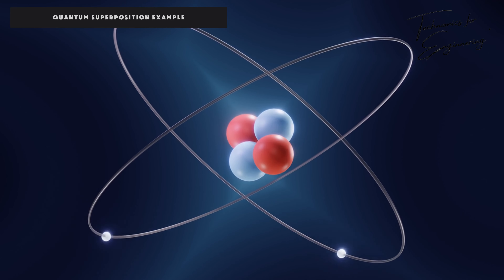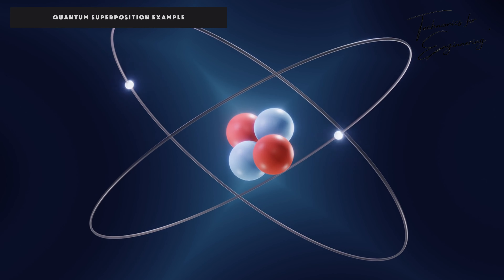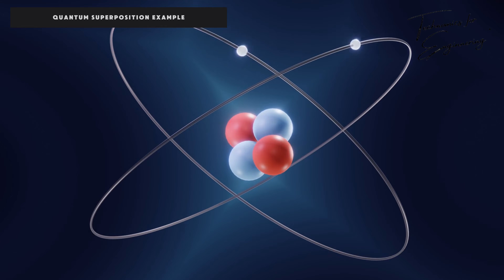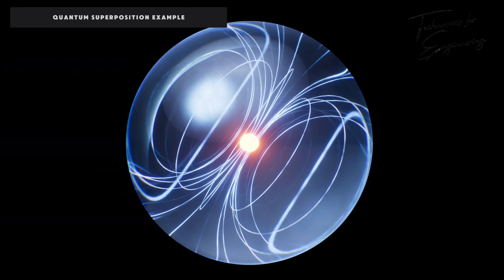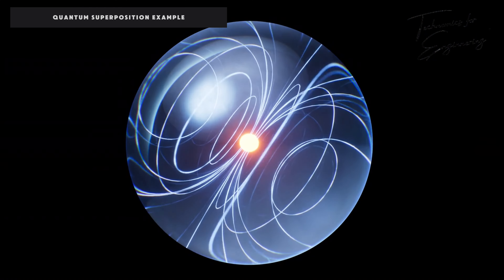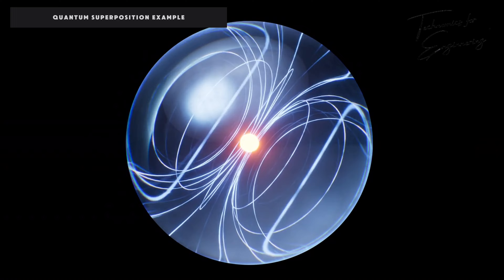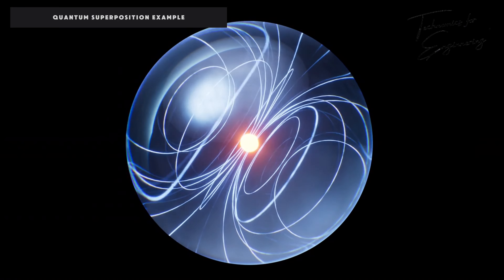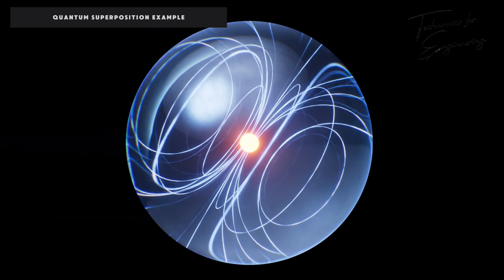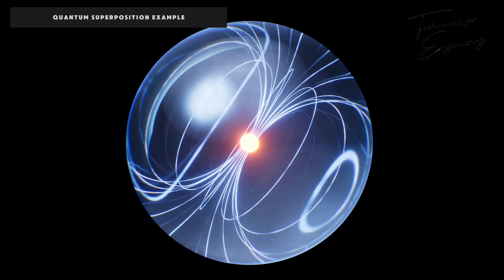For example, if you think about an electron, it has two states: spin up and spin down. In quantum superposition, the electron exists in both spin up and spin down states simultaneously until it is measured.